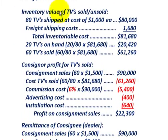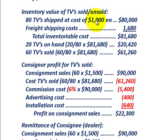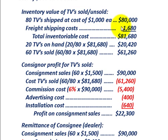Let's go down and make our calculations. For the inventory value of the TVs that were sold and unsold, we have 80 TVs shipped at a cost of $1,000 each — that's the cost the consignor has on these TV sets — so 80 times $1,000 gives us $80,000. The shipping cost of $1,680 is included in the inventory. So our total inventory value cost is $81,680.